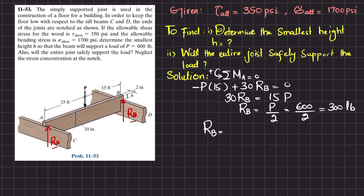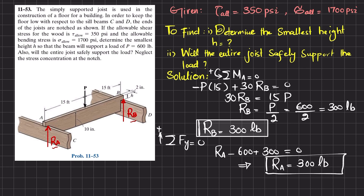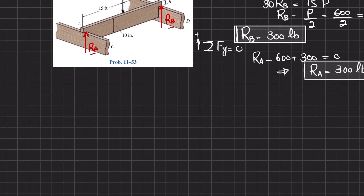Now that we have Rb equal to 300 pounds, we can find Ra using the equilibrium equation: sum of all forces in the y-direction equals zero, with upward forces positive. So Ra minus P plus Rb equals zero, meaning Ra minus 600 plus 300 equals zero, and Ra is also equal to 300 pounds.